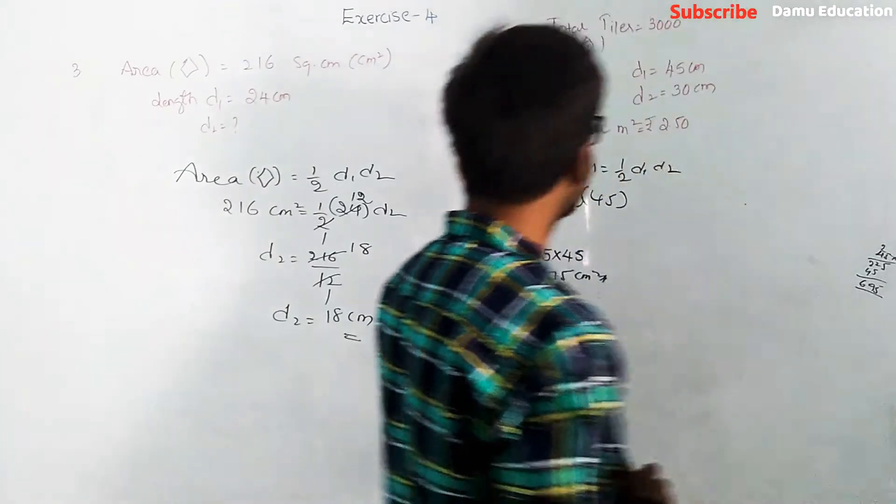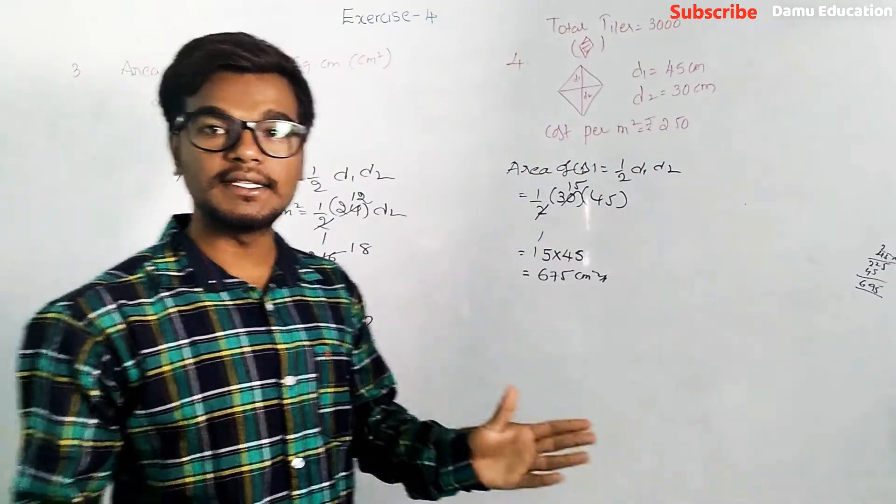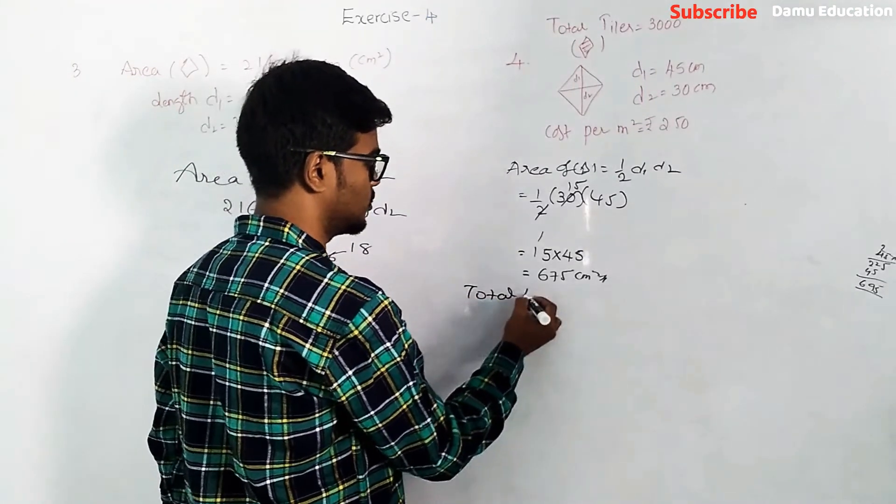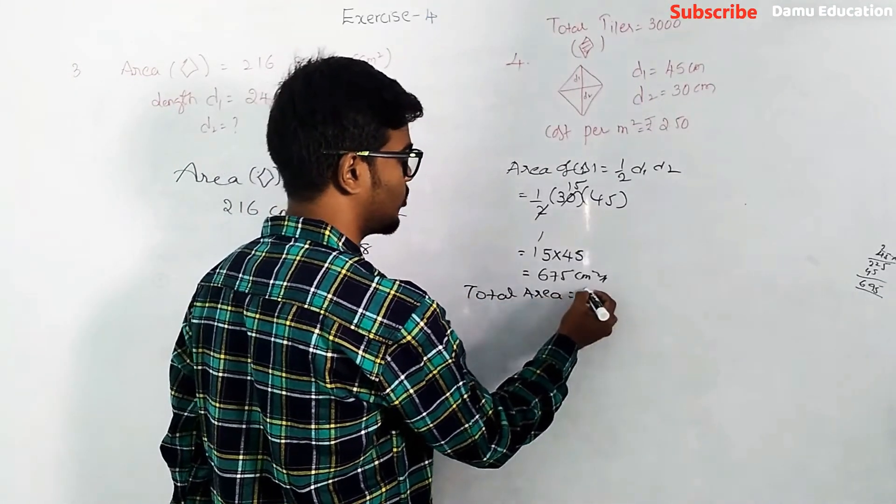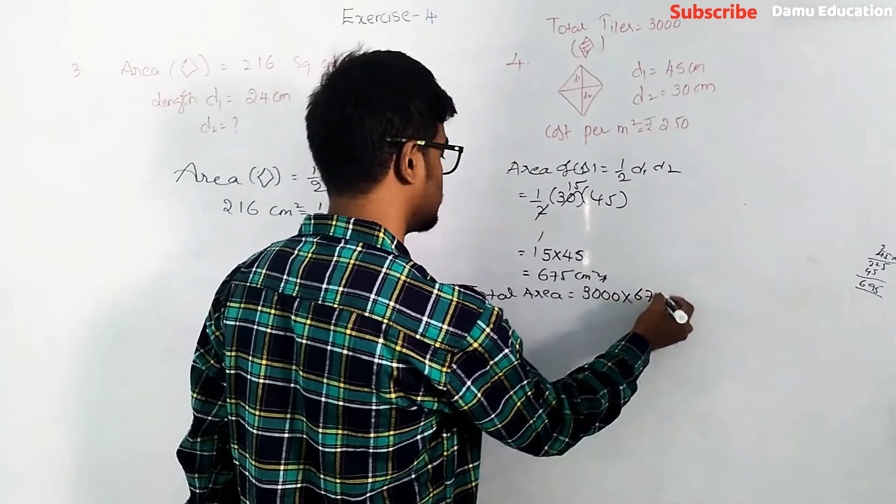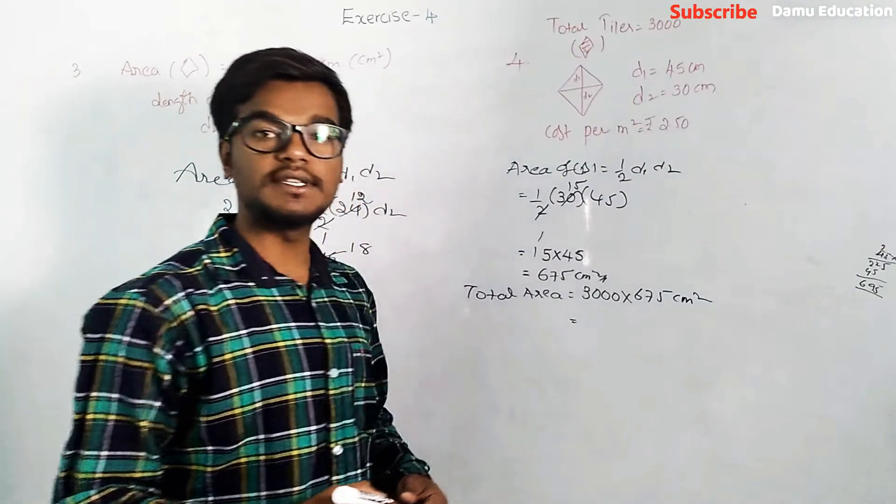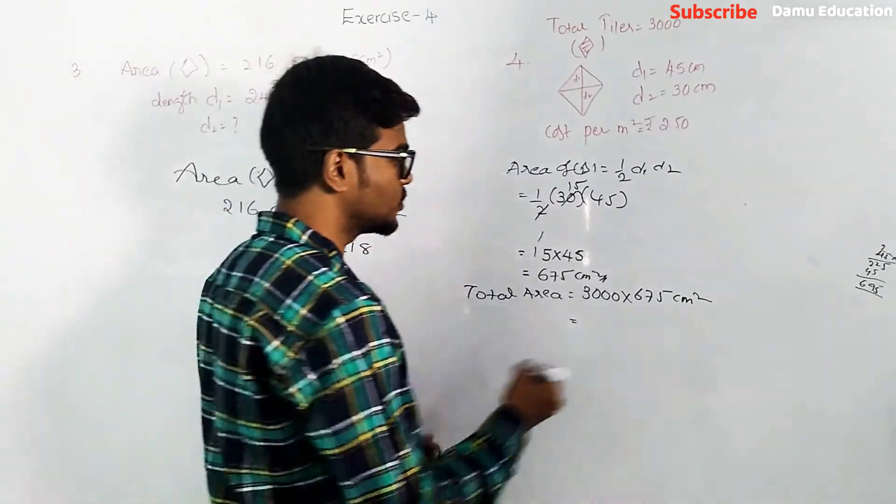Next, what is the total area? Total area equals number of tiles times each one: 3000 into 675 centimeter square. 3000 into 675, what is the total area?